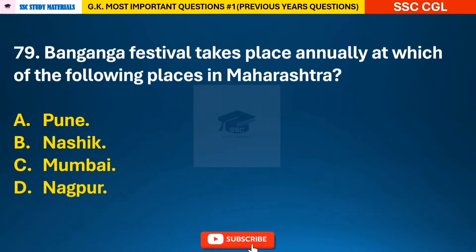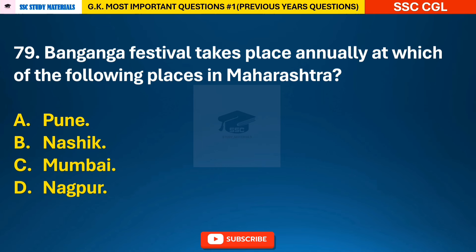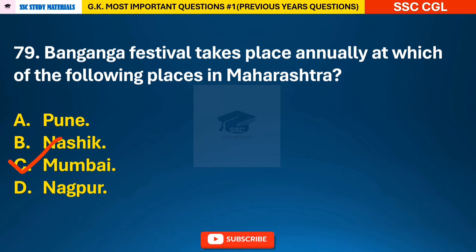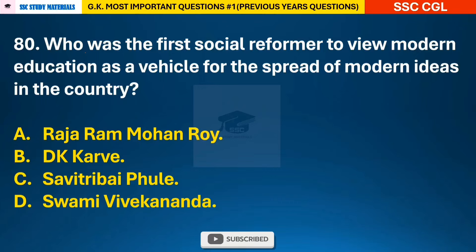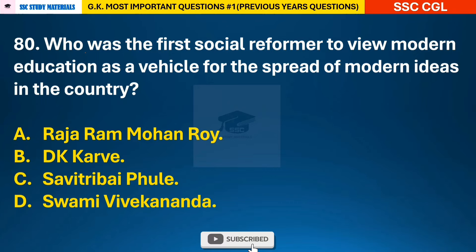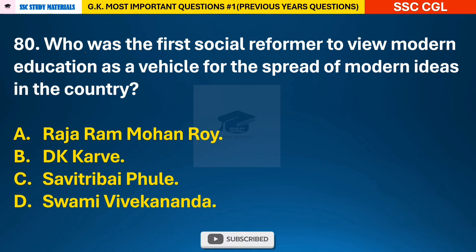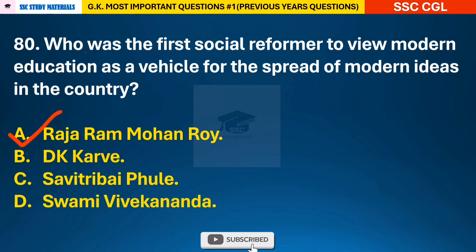Question 79: Banganga Festival takes place annually at which of the following places in Maharashtra? — answer C: it takes place in Mumbai, Maharashtra. Question 80: Who was the first social reformer to view modern education as a vehicle for the spread of modern ideas in the country? — answer A: Raja Ram Mohan Roy.